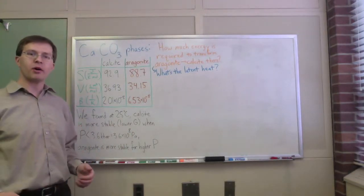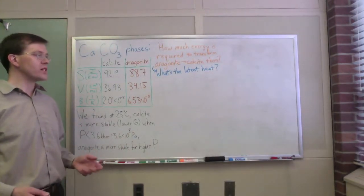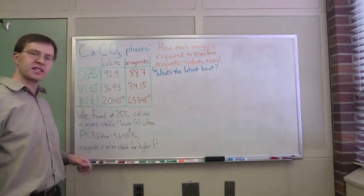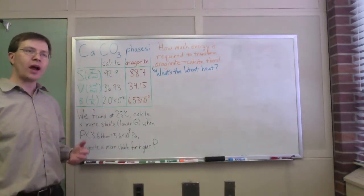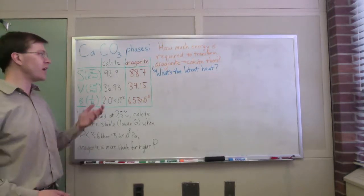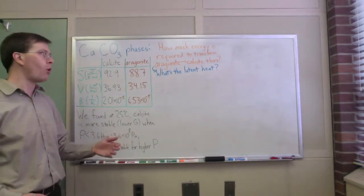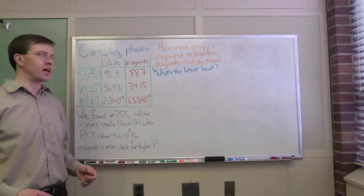What I want to talk about now is this question: if you are at that point, 25 degrees Celsius, 3.6 kilobars of pressure, and you're in the aragonite phase, how much energy does it cost per mole to transform the aragonite into calcite?